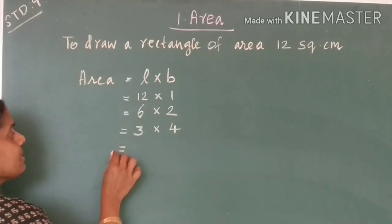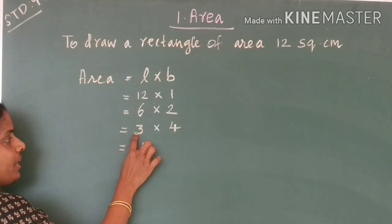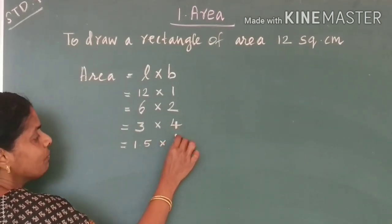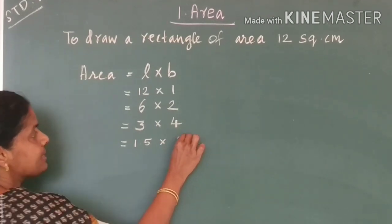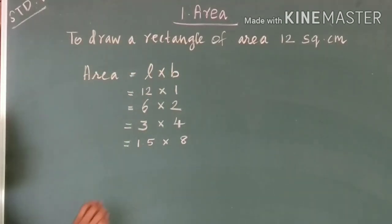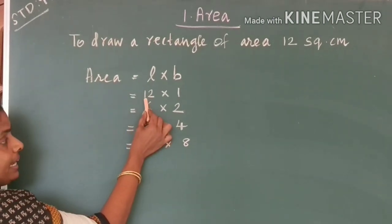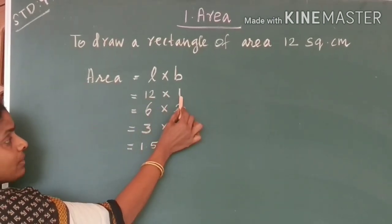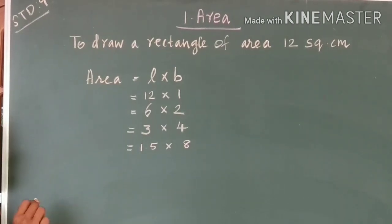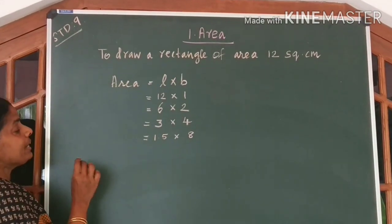Or otherwise, we can even take 1.5 into 8, which also gives 12 square centimetre. So there are enough ways to draw a rectangle of area 12 square centimetre. When the length changes, breadth also changes. Now, in this chapter, we talk about areas of triangles.